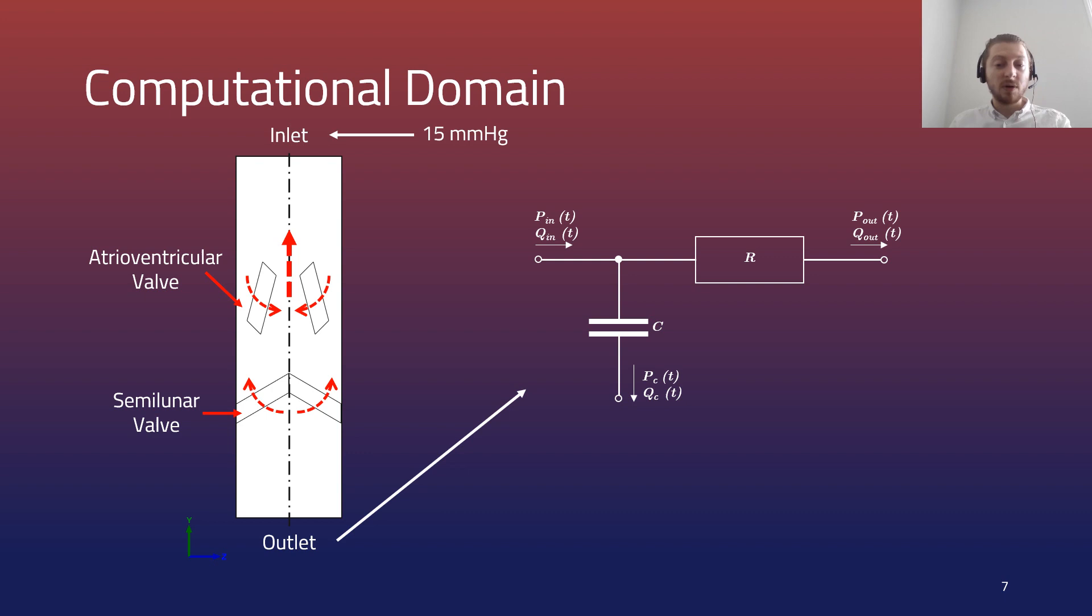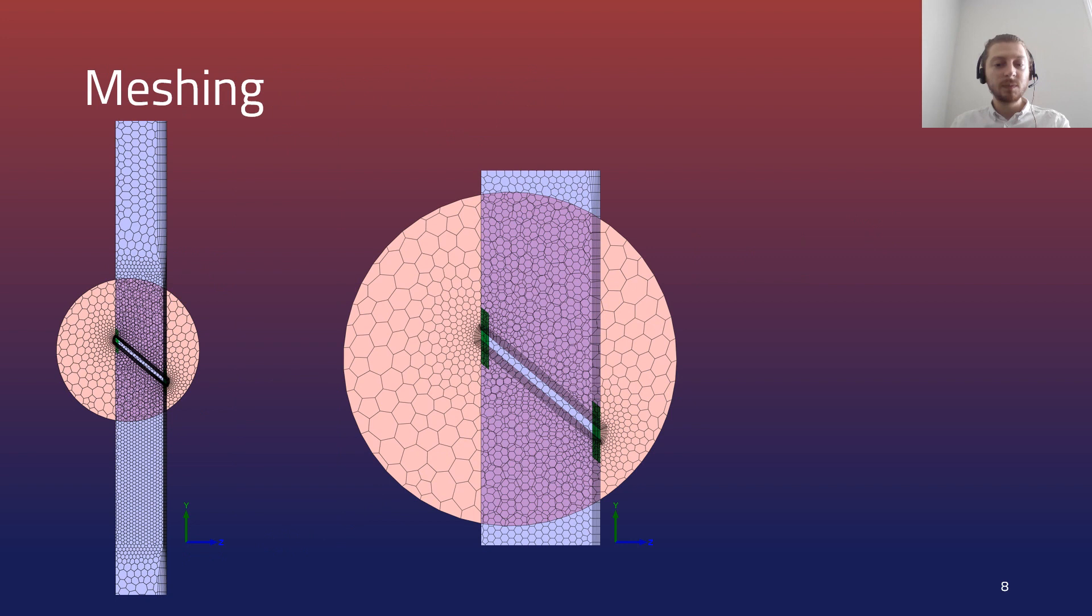This lumped parameter model approximated the resistance and compliance of the downstream vasculature and returned a variation in the pressure depending on the flow rate through the outlet.